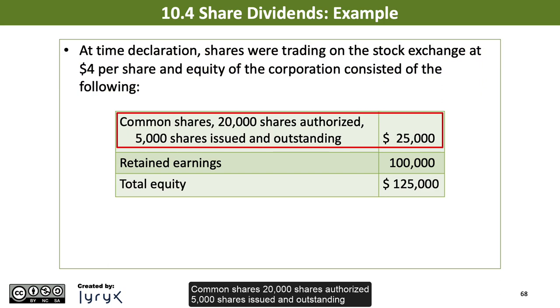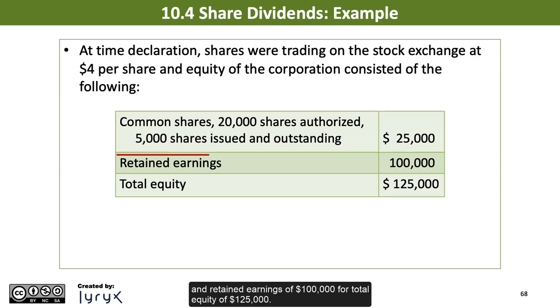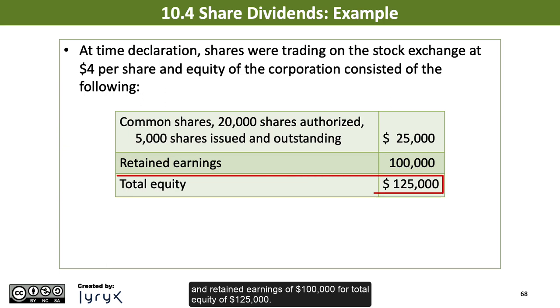Common shares: 20,000 shares authorized, 5,000 shares issued and outstanding, with paid-in capital of $25,000, and retained earnings of $100,000, for total equity of $125,000.